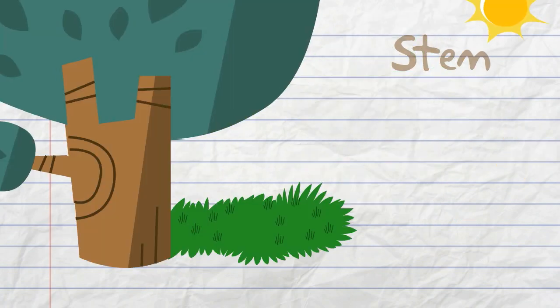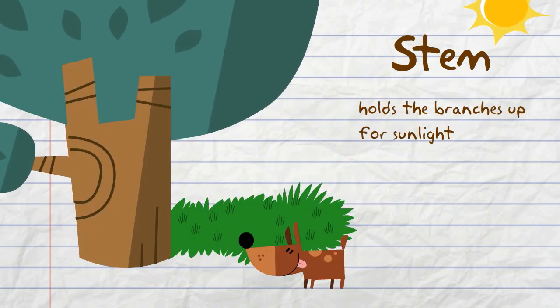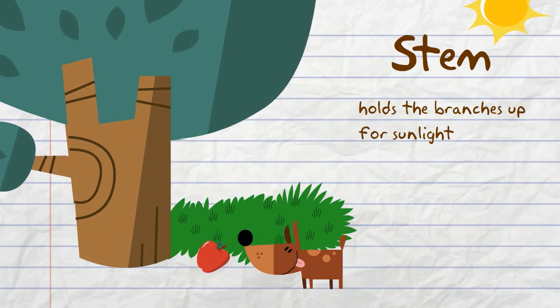The stem of the plant holds the branches up so that the leaves can receive sunlight.